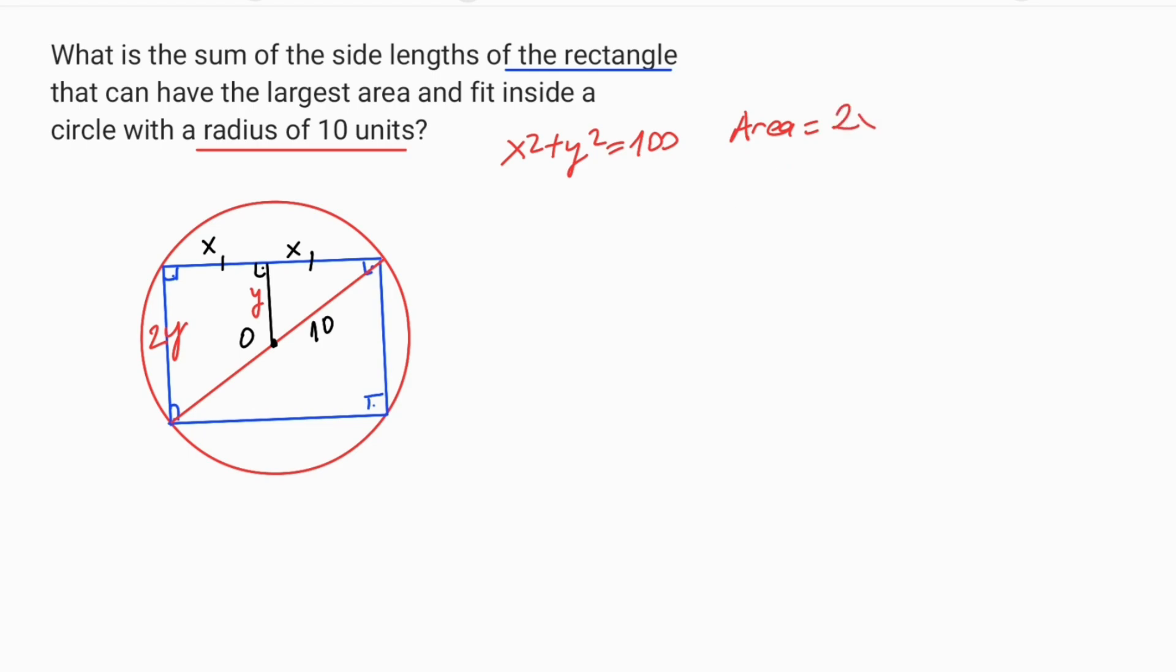The area of this rectangle equals 2x times 2y, so 4xy. We are asked for this expression to be maximized, so we know that in order for an area to be maximum its first derivative must be equal to zero.